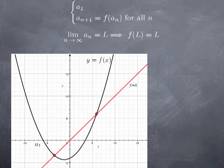Now let's look at the same situation, but where a1 is placed differently on the x-axis, and I play the same game. I plug a1 in the function to get a2, so this point here has y coordinate a2. The point on y = x that has the same y coordinate is a2. So because the x coordinate is a2, I can plug a2 inside the function and then I get a point of y coordinate a3. So here I have a3, a3 on y = x. If I plug it inside the function, I get a point of y coordinate a4.